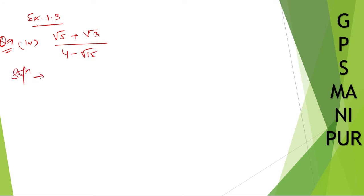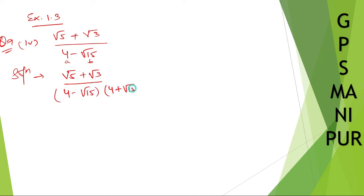This is similar to the previous three questions. So let me do the same thing. If you take this 4 as a and root 15 as b, then the denominator is a minus b. So we multiply by a plus b, which is 4 plus root 15, to get a squared minus b squared.